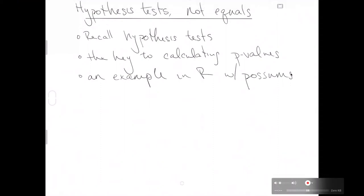In this video, we're going to talk about hypothesis tests yet again. It will be another example, but this time the alternative is going to be not equals. Previously, we've seen examples with an alternative hypothesis with less than and greater than. This time it's going to be an alternative hypothesis of not equals to. We will recall hypothesis tests in general, talk about the key to calculating p-values when the alternative hypothesis is not equals to, and then do an example in R.